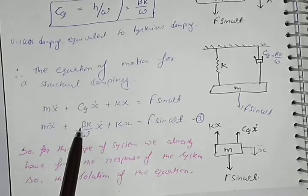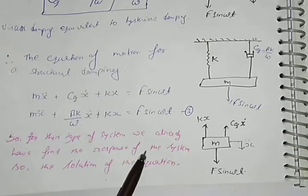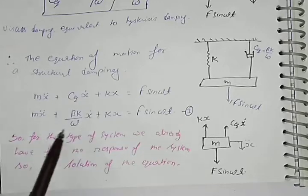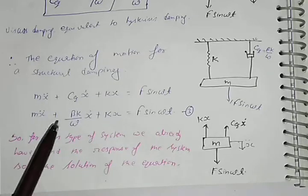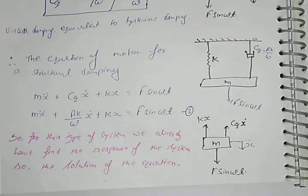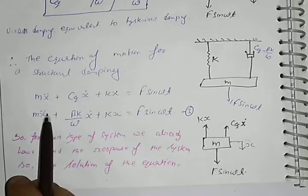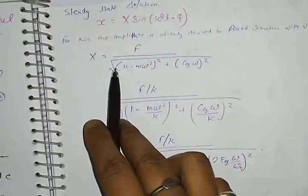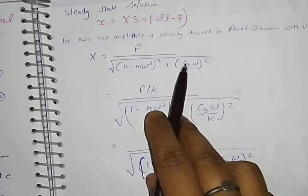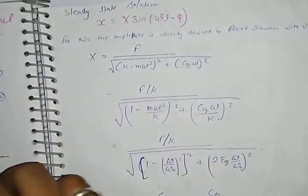We substitute c_equivalent = βk/ω into the equation. We already know the response of this type of system from forced vibration with viscous damping. The steady-state amplitude solution is: x = F / √[(k − mω²)² + (c_equivalent·ω)²].